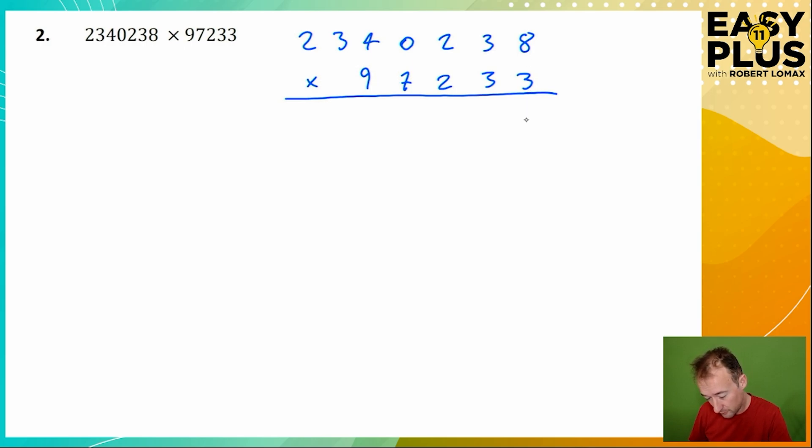3 times 8 is 24. 3 times 3 is 9 and the carried 2 gives us 11. 3 times 2 is 6, carry gives us 7. 3 times 0 is 0. 3 times 4 is 12. 3 times 3 is 9, the carry makes it 10. And 3 times 2 is 6, and the carry makes it 7. We dealt with that 3.